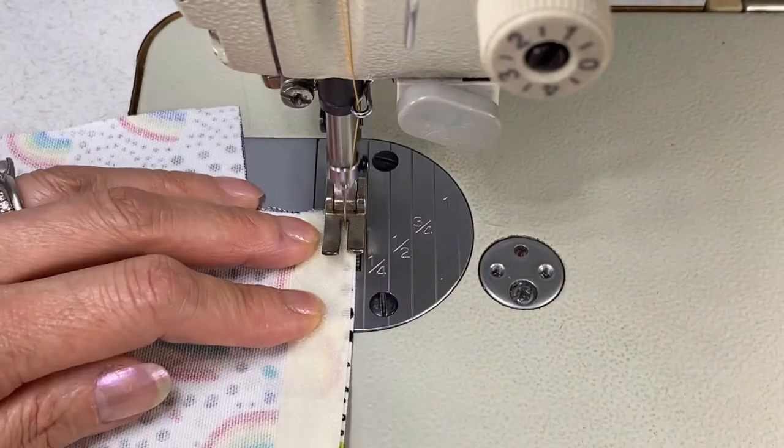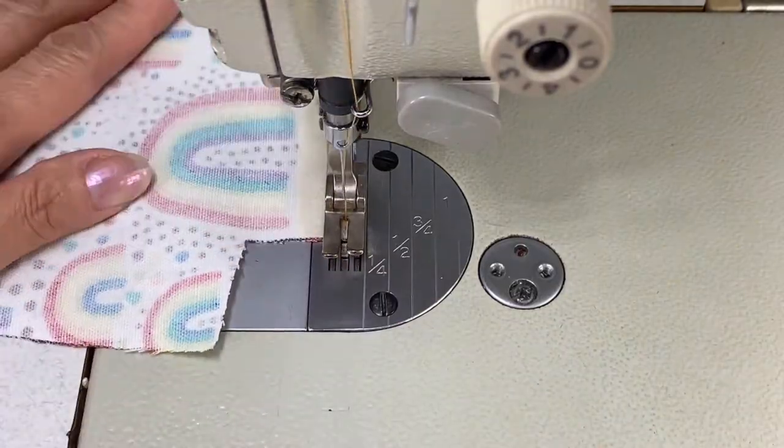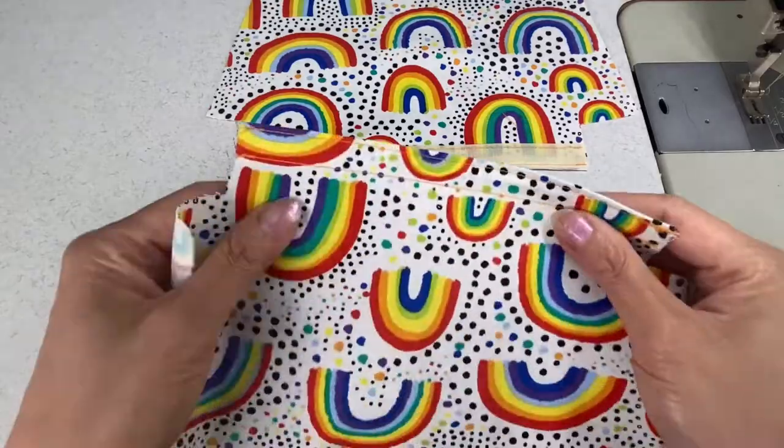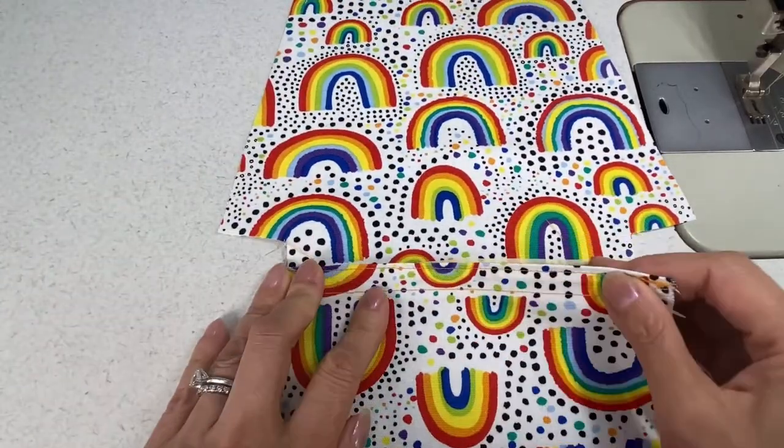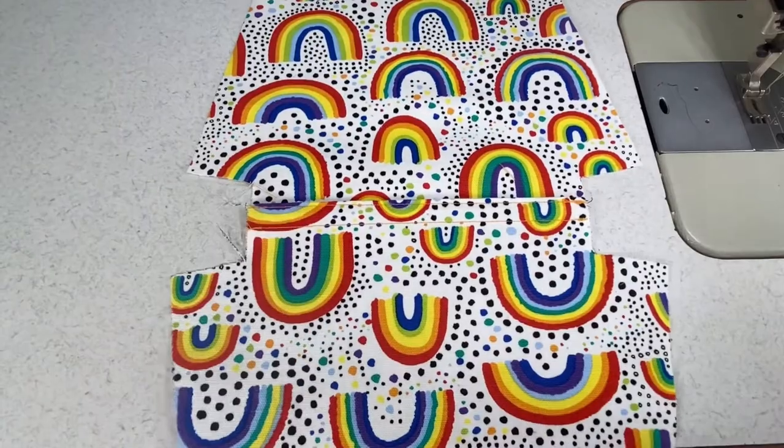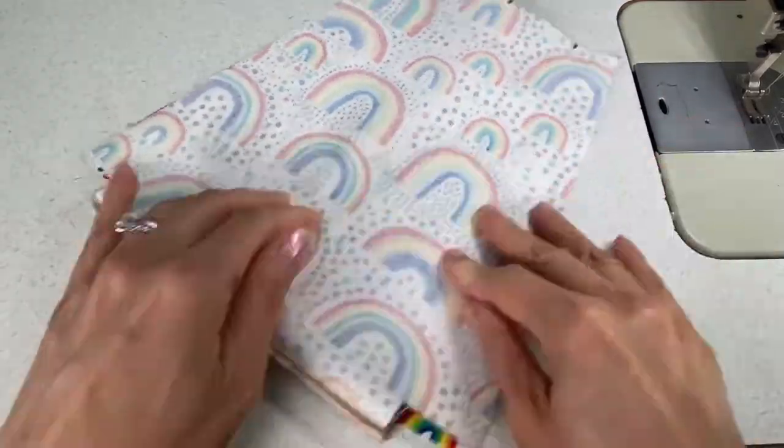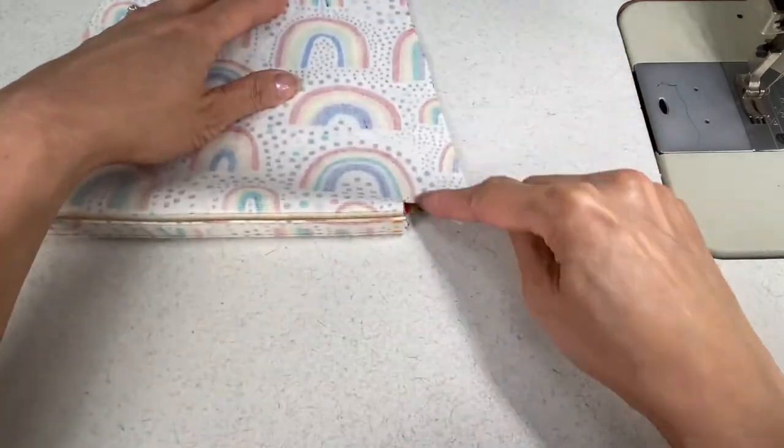Now stitch the other piece of velcro onto the second fabric piece. Flip that piece over so that right sides are facing up. Connect the velcro so that it's just overlapping half an inch. Now place right sides together matching all the edges along the three sides.